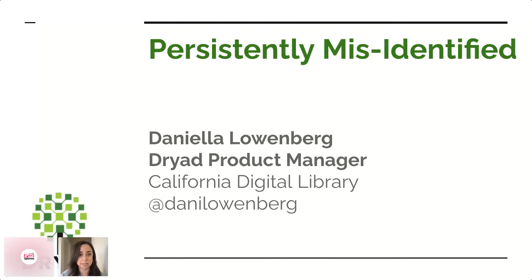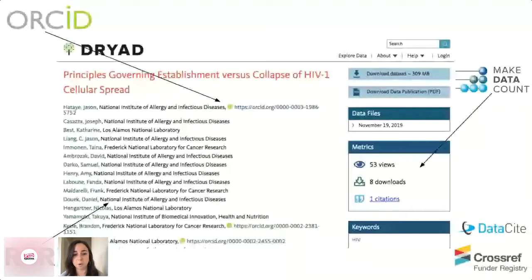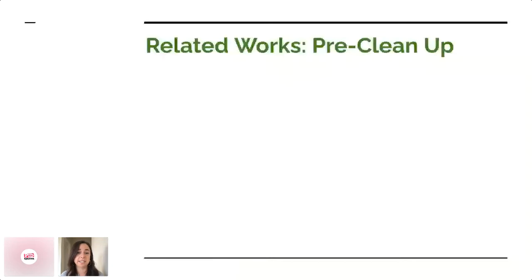That's the premise of what I want to walk through today. Dryad is a data publishing platform, and we love PIDs. We use ORCID for login, we have co-author ORCIDs available for anyone to use. We were the first repository to put in ROR IDs for our institutional affiliations. We assign DataCite DOIs, Crossref Funder Registry. We harness the power of PIDs to look at usage with the Make Data Count initiative. But when we looked at our related works — the section where an author's submitting their data and can say it's related to another dataset, code, articles — it was a mess.